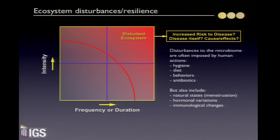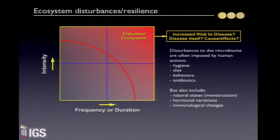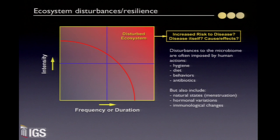Disturbances can be imposed by humans — for example, our hygiene, diet, behavior, antibiotic use — basically our life history. All those disturbances are going to influence our microbial community. But they also include normal biological processes. For example, menstruation in women can have an effect. Hormonal variation over a woman's lifespan can have major effects on vaginal microbiota composition and function, as well as changes in immunological status over time.